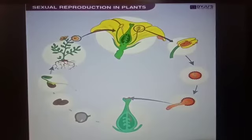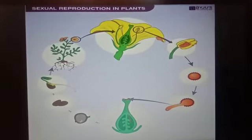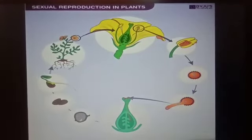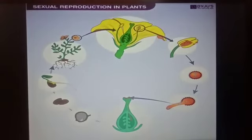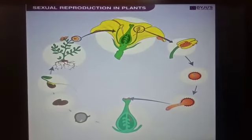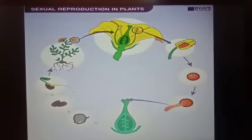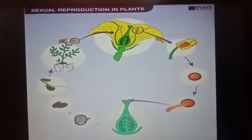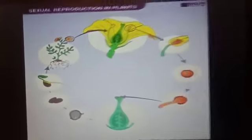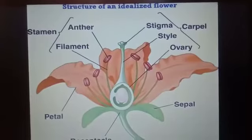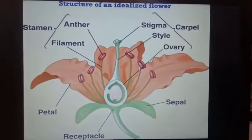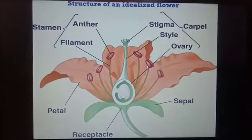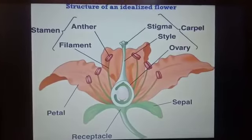Flowers are the reproductive parts of the plant. The function of a flower is to make the male and female gametes and to ensure that fertilization will take place to make seeds for growing new plants. Let us start with the structure of a flower. The main parts of the flower are sepals, petals, stamen, and pistil, as shown in the figure.